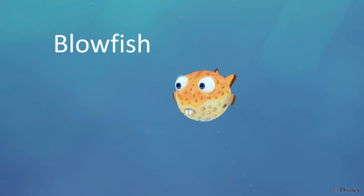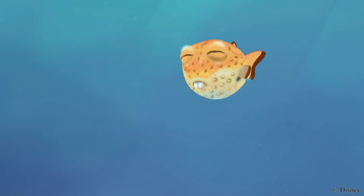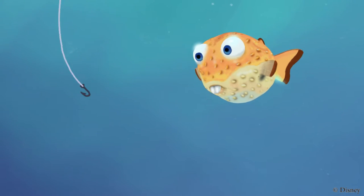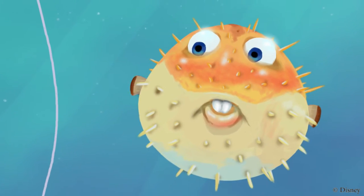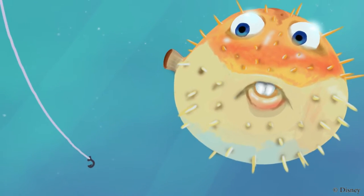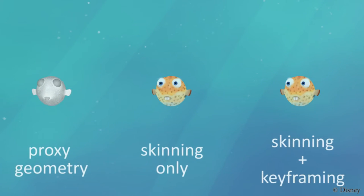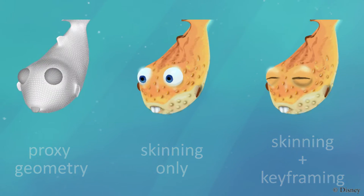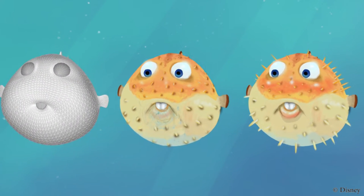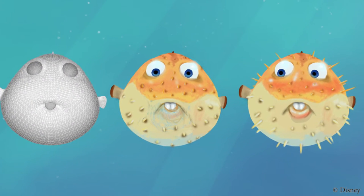Our system enables the animation of 3D paintings in different styles. For instance, this example is painted in a somewhat tighter style. Configuration space keyframing was used for the fish spikes, the eye movement, and the highlights under the eyes.